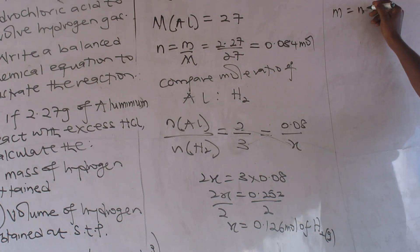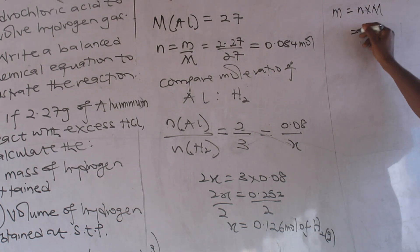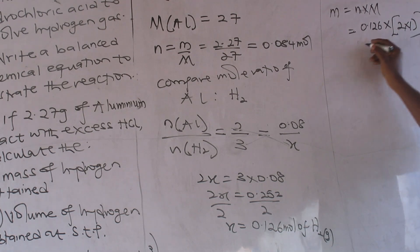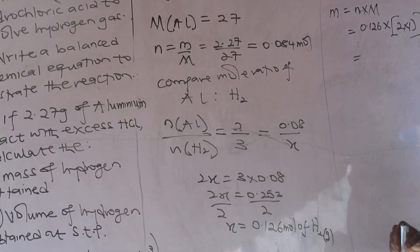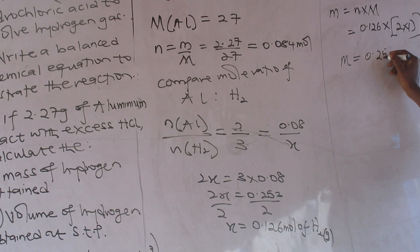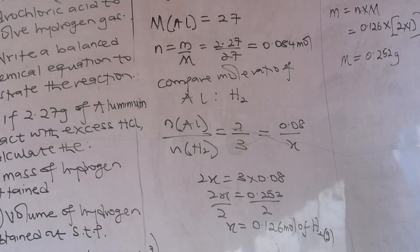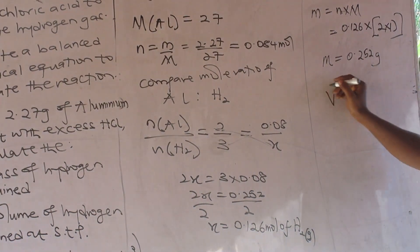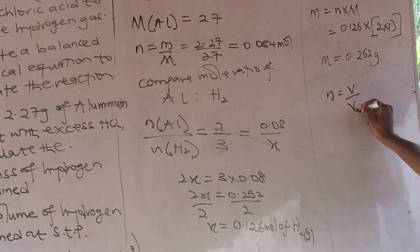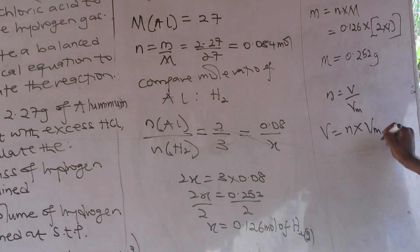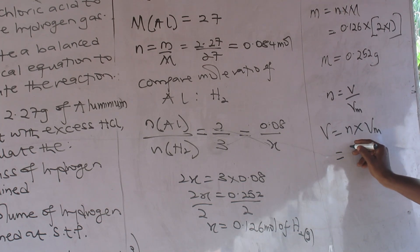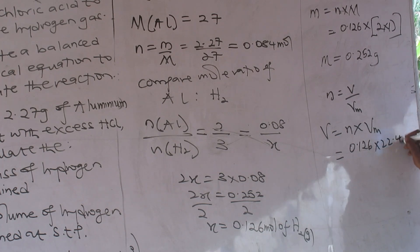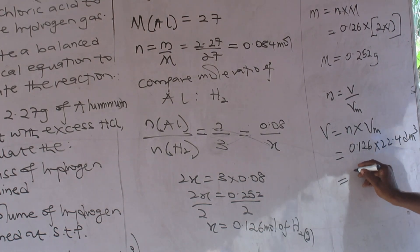Mass equals number of moles multiplied by molar mass. The number of moles is 1.26. The molar mass of hydrogen gas (H2) is 2×1 = 2 g/mol because it's a diatomic gas. For the volume of hydrogen at STP: volume equals number of moles multiplied by molar volume. Number of moles of hydrogen is 1.26. Molar volume at STP is 22.4 litres/mol. So volume = 1.26 × 22.4 = 28.20 litres.